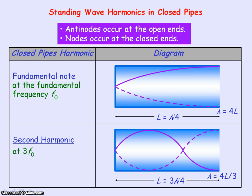For the third harmonic in a closed pipe, the standing wave will vibrate at a frequency of 5f₀. Having five times the frequency means a fifth of the wavelength, so the length of the pipe will equal one and a quarter wavelengths.